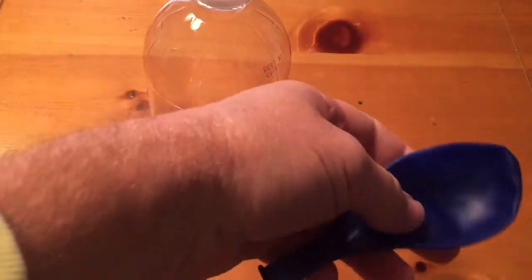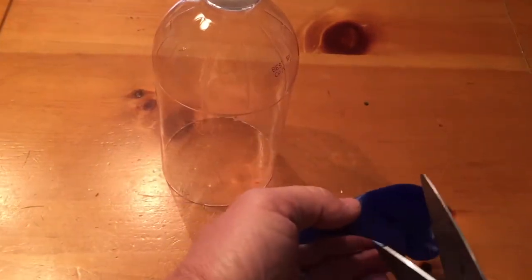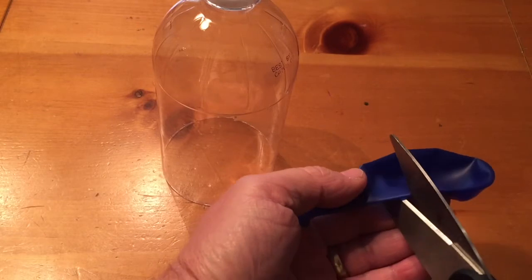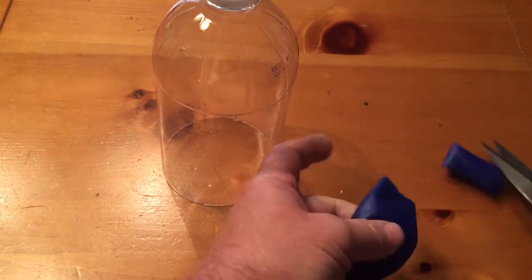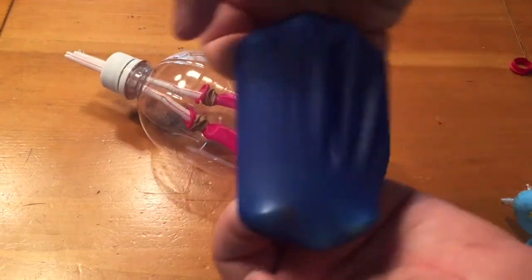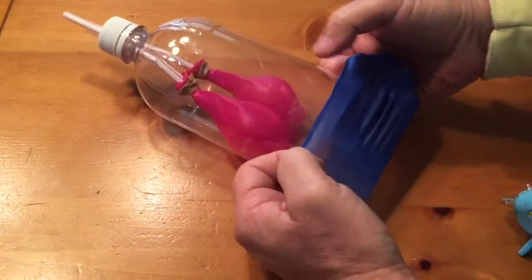Then for the last part, you just take a balloon. I have a 12-inch balloon here. And you cut it off just about where it starts to get big. So just take your scissors very carefully and cut that off. And that's going to be the bottom part of your bottle.